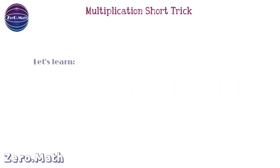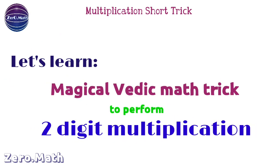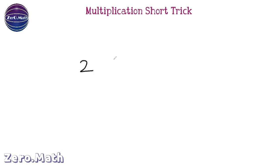Welcome to ZeroMath. In today's video, we'll learn how to do the two-digit multiplication in very simple steps. Let us take random numbers, 21 into 33. The steps are very easy.